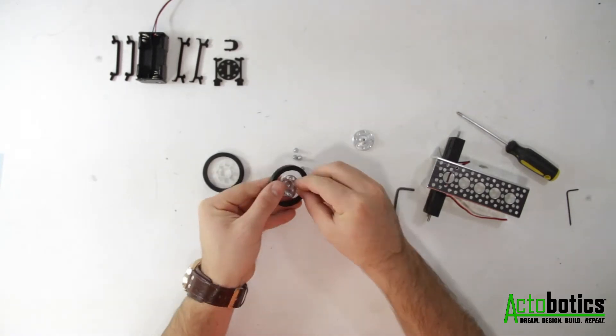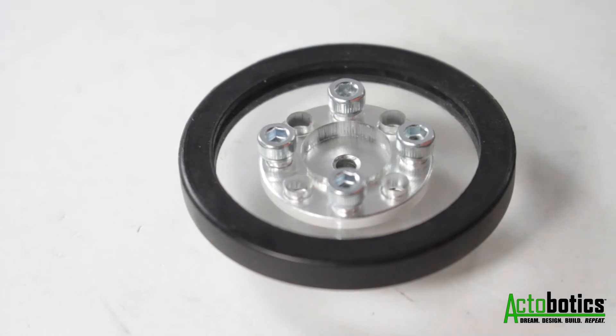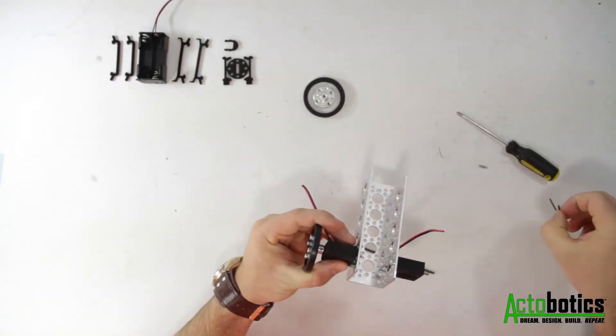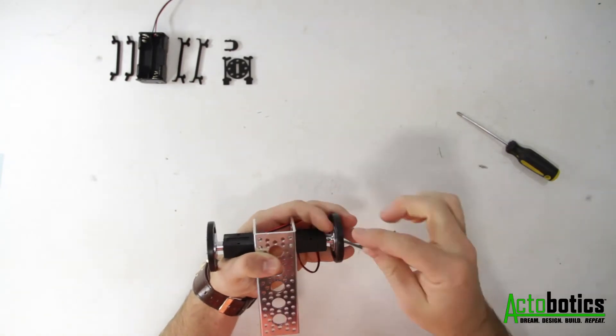Take care to avoid over tightening these screws as it may result in cracking the wheels. You'll now fasten the wheels to the motor shaft using the provided 1/16th hex key to tighten the set screws.